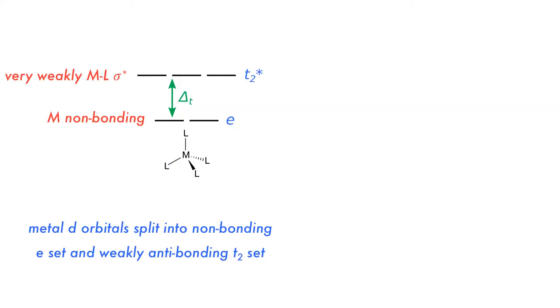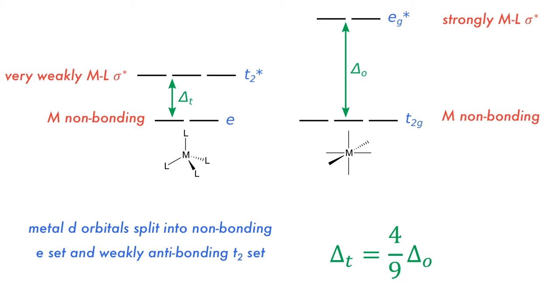In a tetrahedral geometry, the metal D orbitals split into non-bonding E set and weakly antibonding T2 set, which is the opposite of the octahedral geometry. Comparing an octahedral and tetrahedral complex with the same metal ligand combination, the splitting in the octahedral complex is much larger due to the tetrahedral complexes having fewer ligands. Delta T will be slightly less than half of delta O.